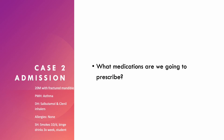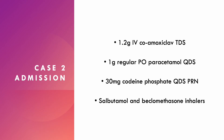Thinking about what medications to prescribe: you want to consider what analgesia they need for their injury and whether to prescribe regular medications as well. This patient is started on 1.2 grams of IV co-amoxiclav three times a day, 1 gram of regular oral paracetamol four times a day, 30 milligrams of codeine phosphate four times a day as required, plus salbutamol and beclometasone inhalers for their regular medications. Ibuprofen has not been prescribed because this patient has asthma — you need to be cautious using NSAIDs in asthmatic patients unless you know they don't have an issue taking them.